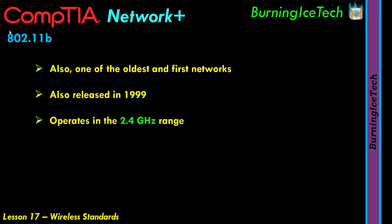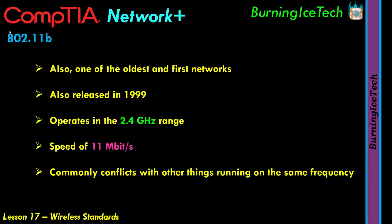The 802.11b has a much lower speed of only 11 megabits per second, and it tends to conflict with a lot of common things out there. There are many things that run at the same 2.4 gigahertz frequency, and since that's one of the most common frequencies, you're going to experience a great deal of possible conflict.